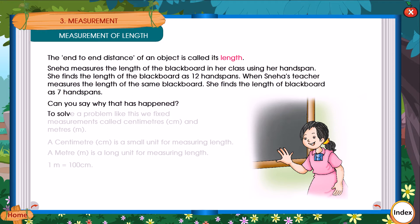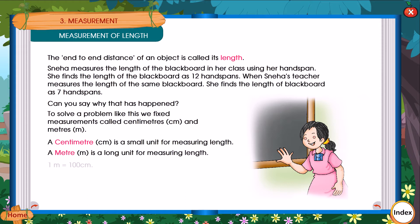To solve a problem like this, we use fixed measurements called centimeters and meters. A centimeter is a small unit for measuring length. A meter is a long unit for measuring length. One meter is equal to 100 centimeters.